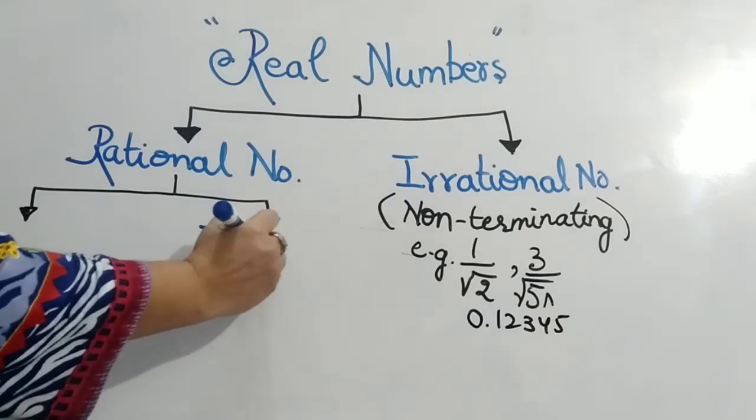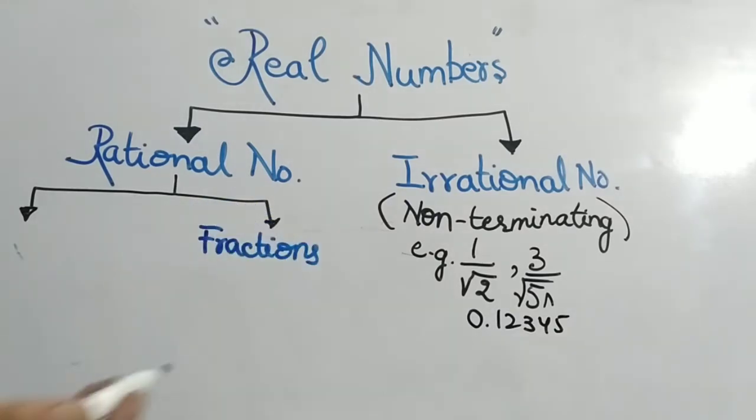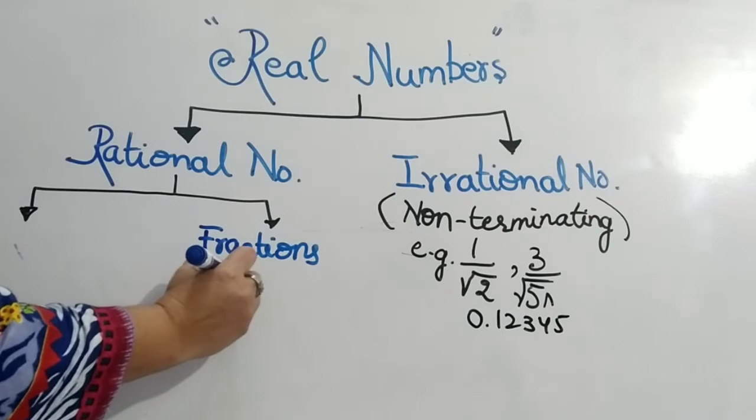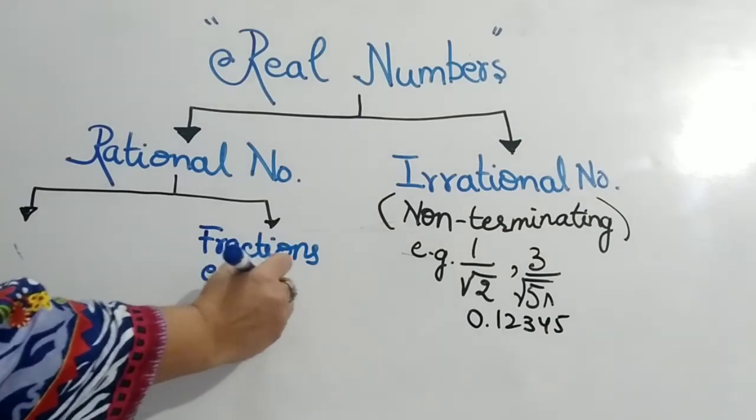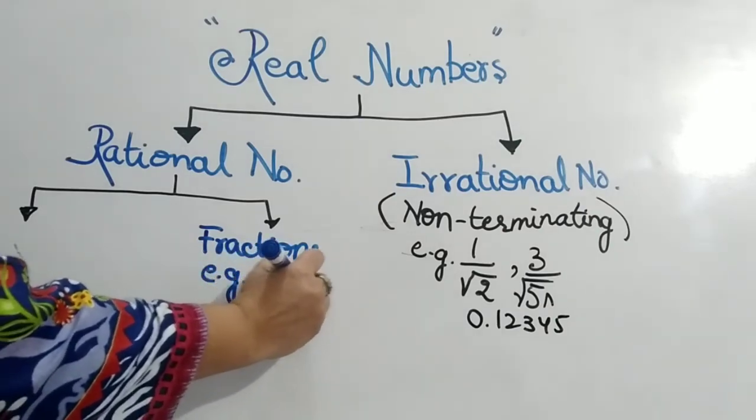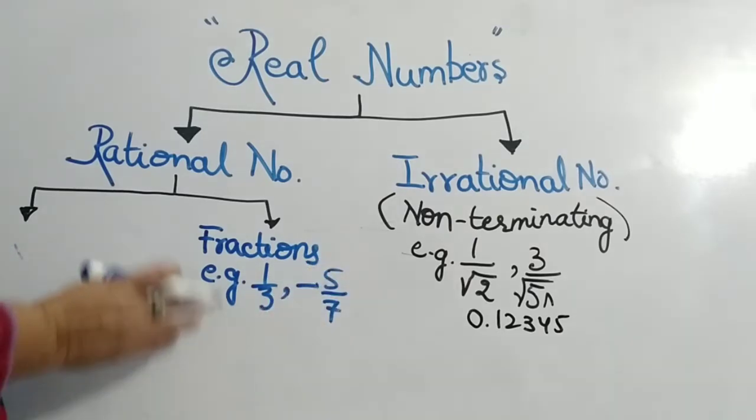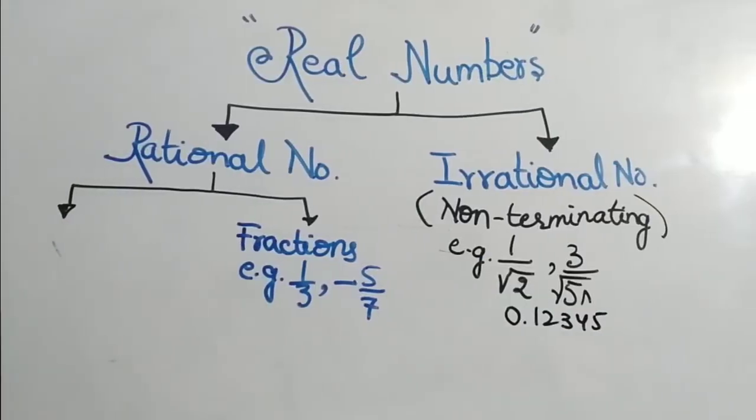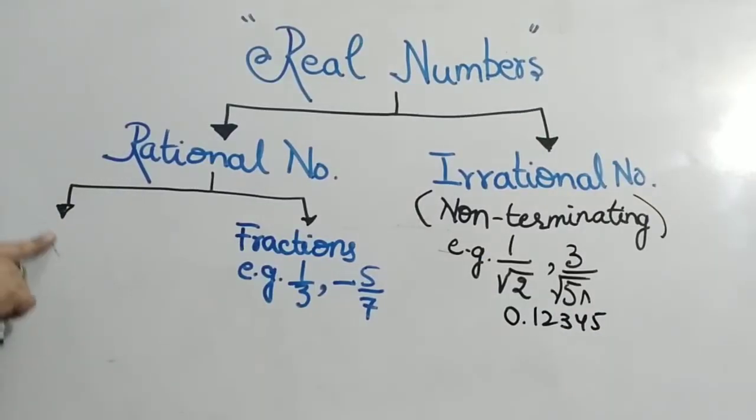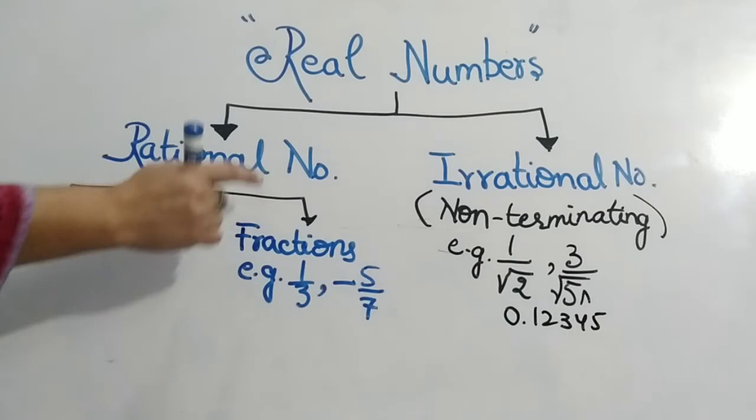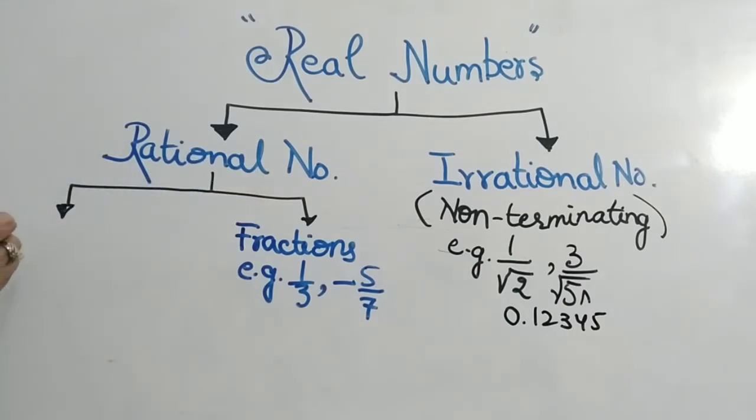Fractions. We have positive fractions, negative fractions. These are all the fractional numbers and fractions. And the second category of rational numbers is integers.